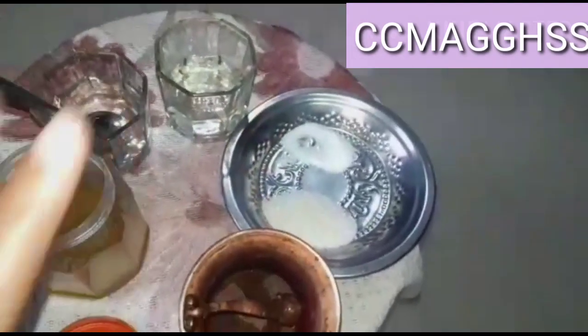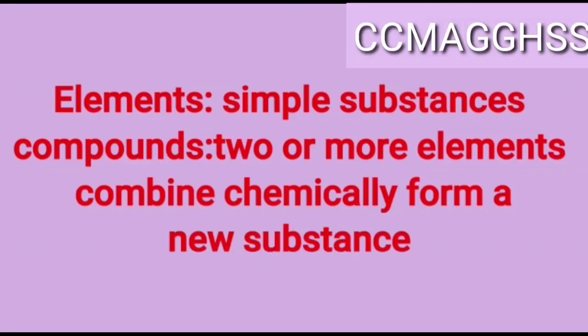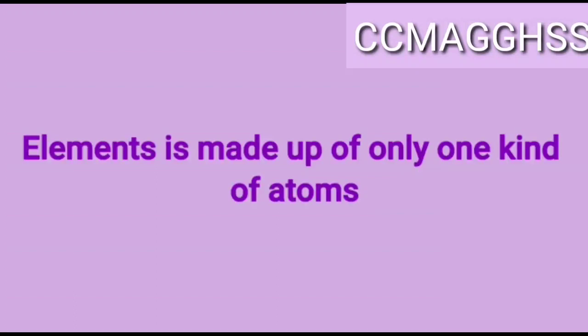So that is pure substance and impure substance. Now we are going to learn about elements and compounds. What is an element? All substances on the earth are made up of certain simple substances called elements. What is a compound? Two or more elements combine chemically and form a new substance — that is called a compound. An element is made up of the same kind of atom, but a compound is made up of two or more elements.